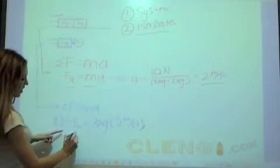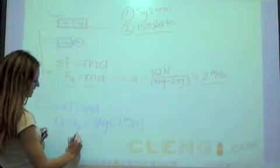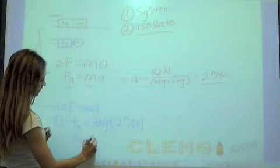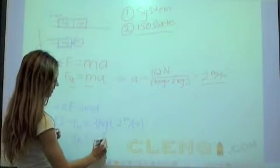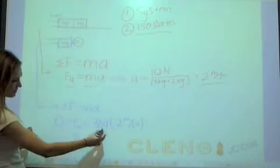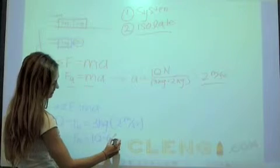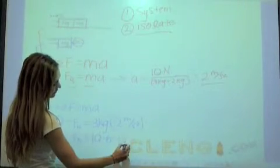So, that means we can solve for the normal force. Force normal is equal to 10 newtons, and then minus 3 times 2 is going to be 6. So that gives us 4 newtons.